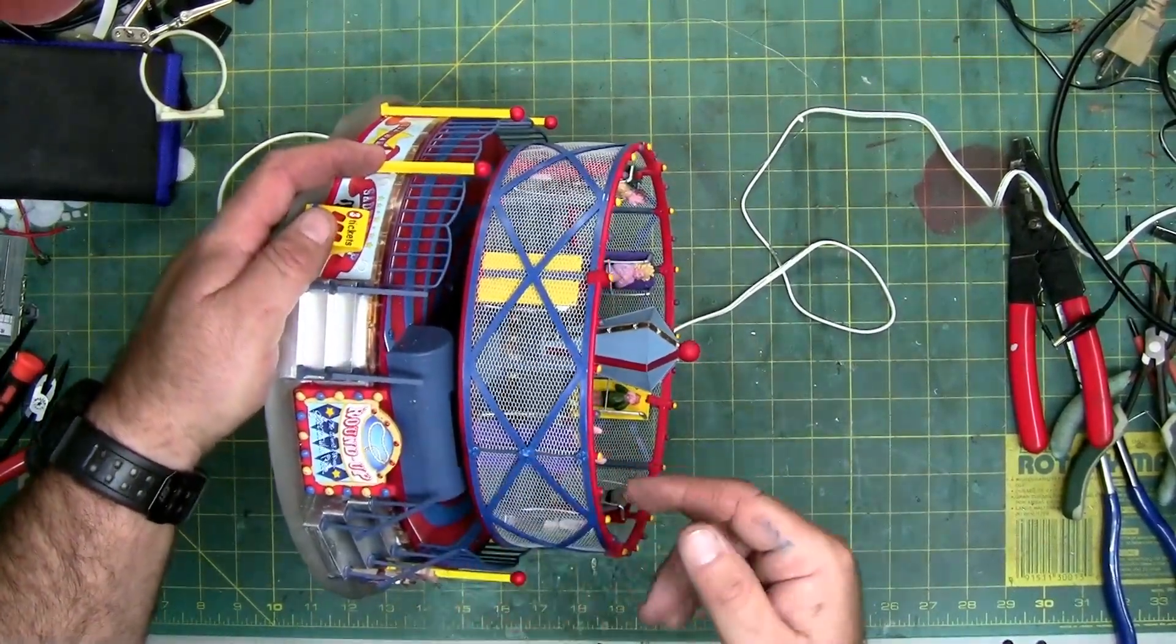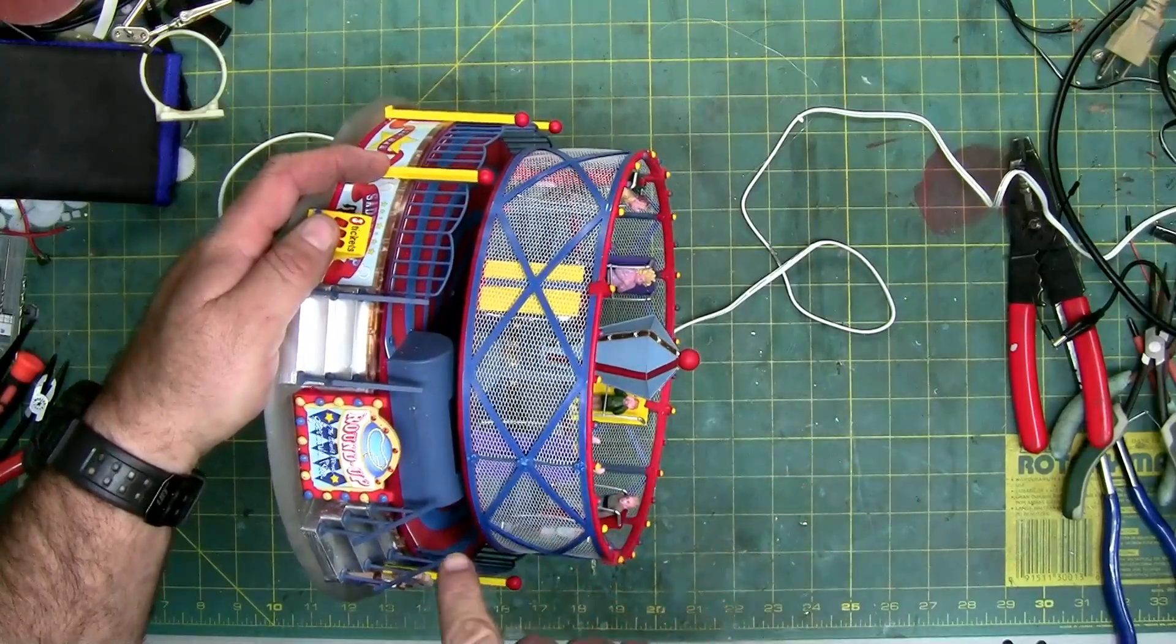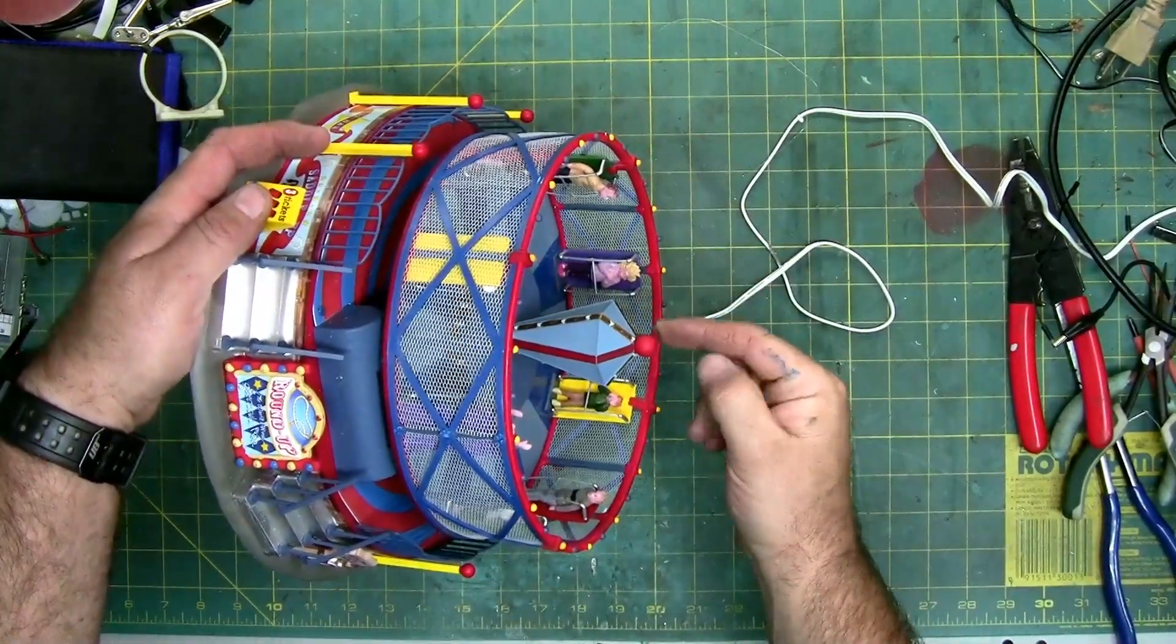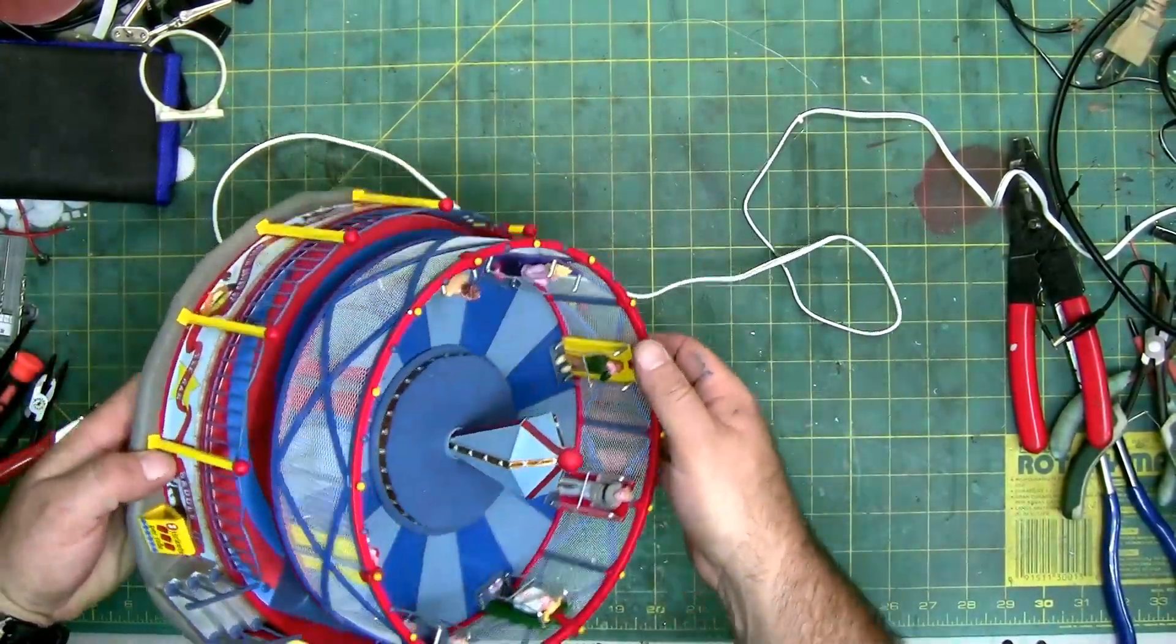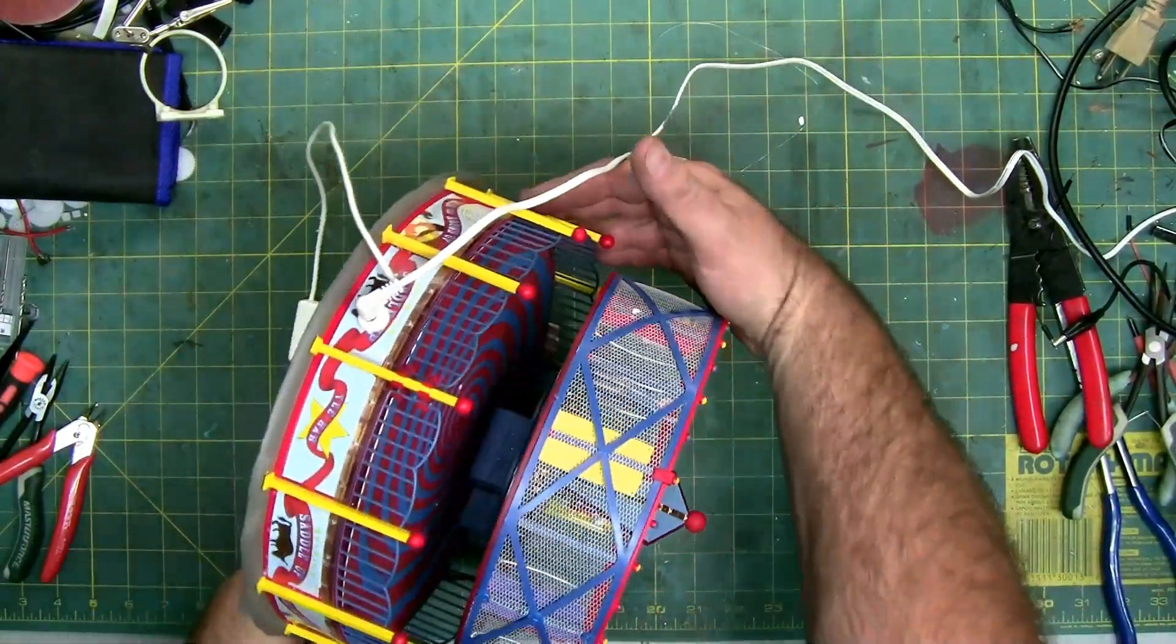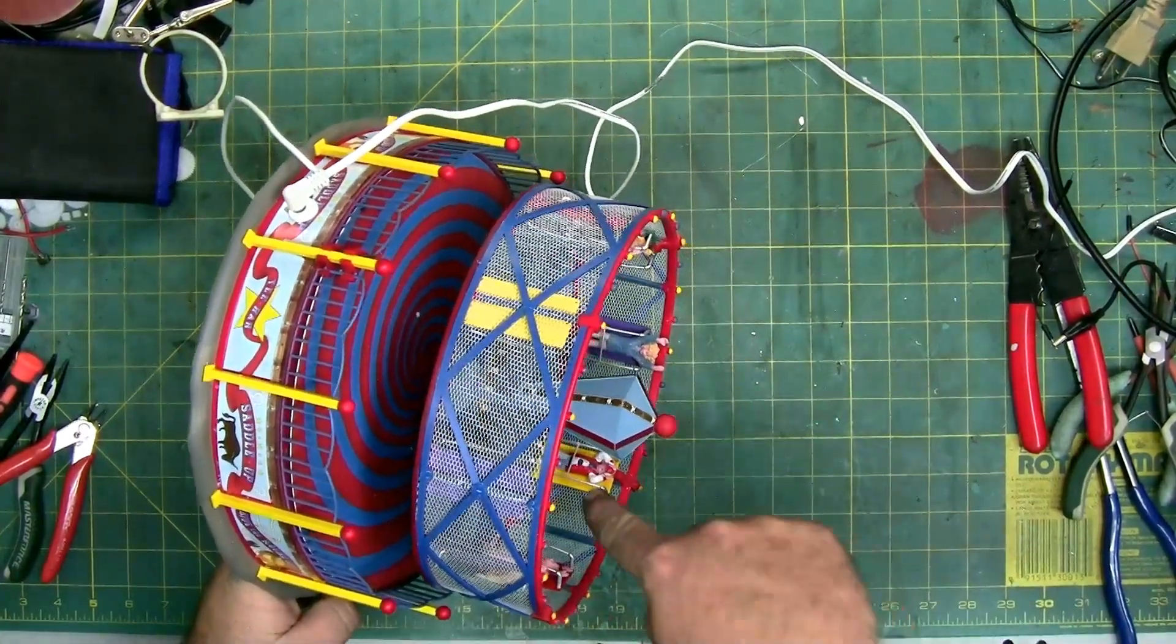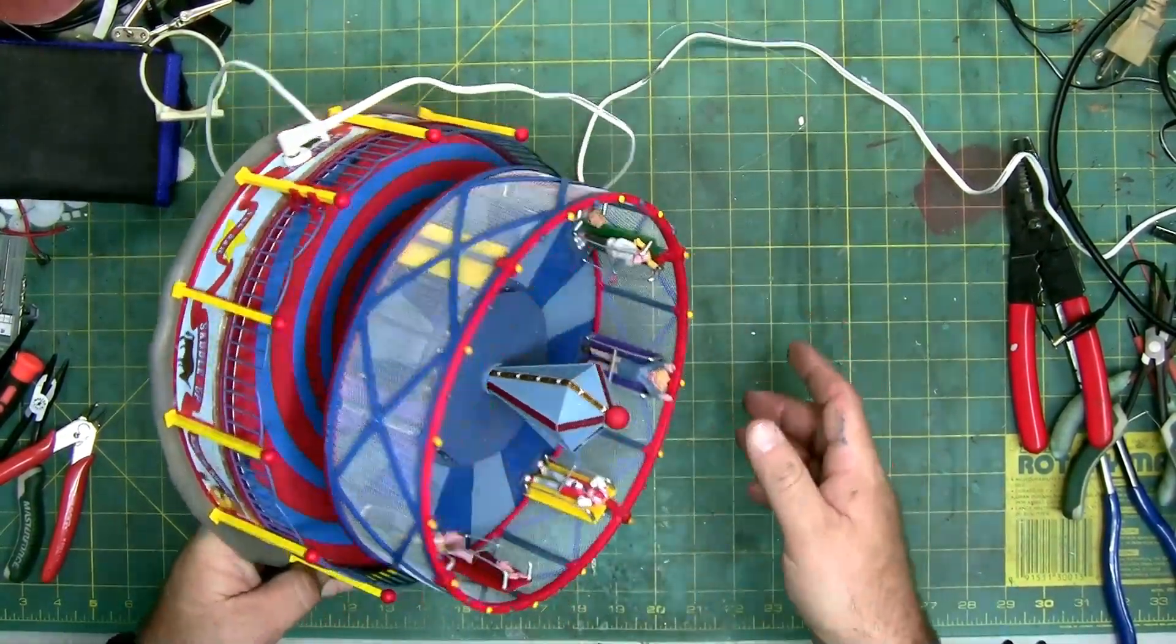When this gets warm, the grease, the lubricant runs down either into this motor, which spins it, which is right here, and it shorts out. Or if it's put away this way, it runs into this motor and shorts it out so it can't lift.